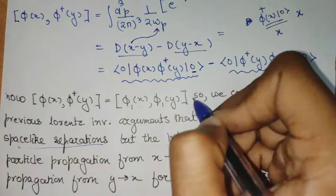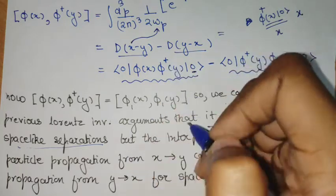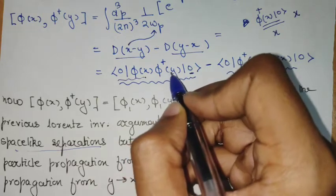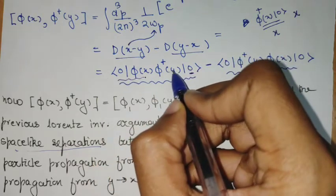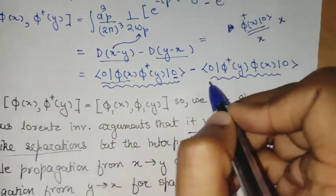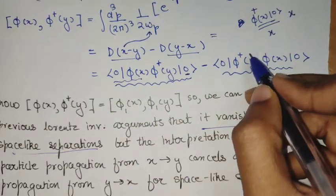At a space-time position zero, I create an anti-particle and then this is also an anti-particle. So this entire term is showing that there is an anti-particle propagation from y to x and that is cancelling a particle propagation from x to y.